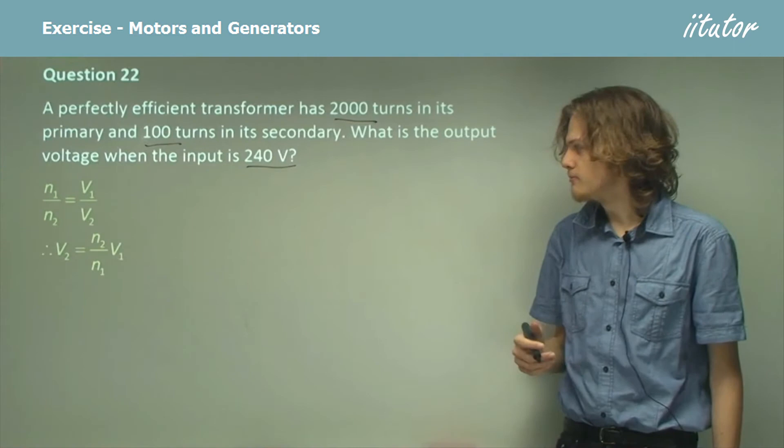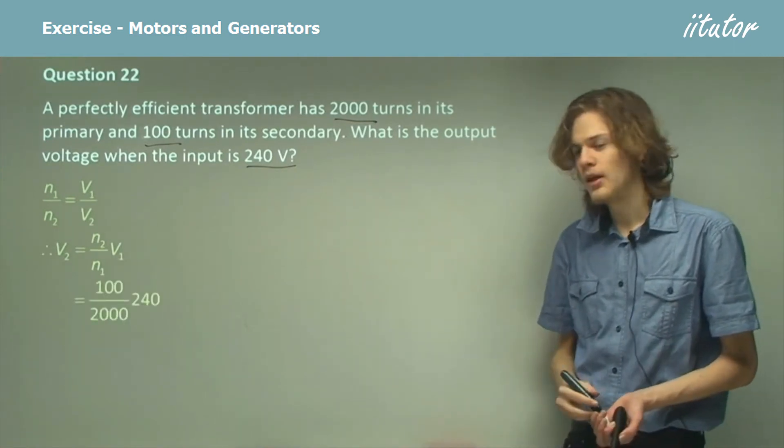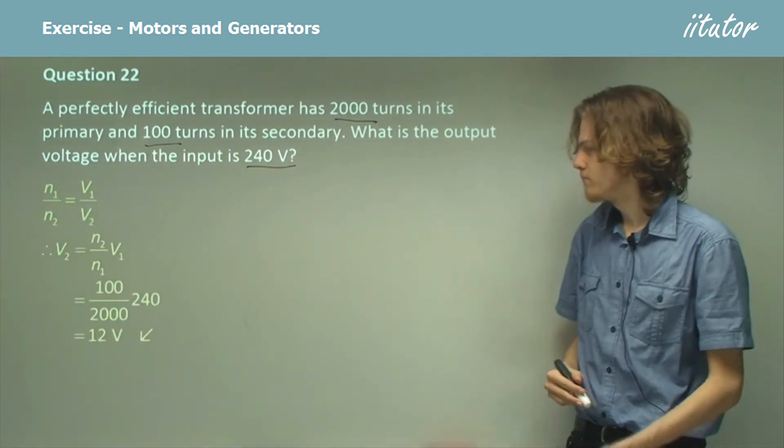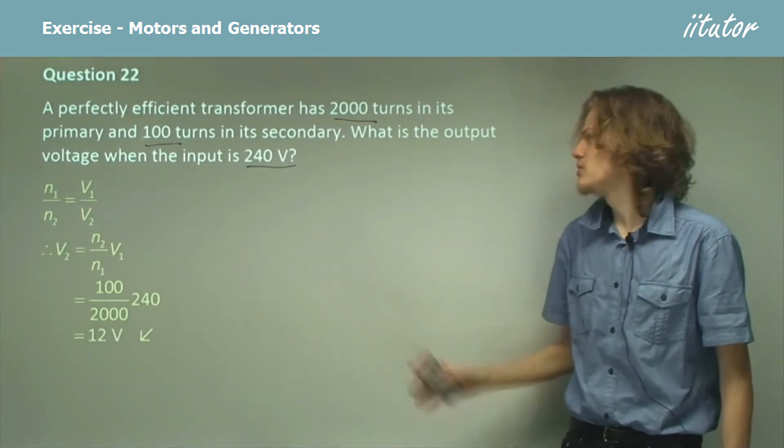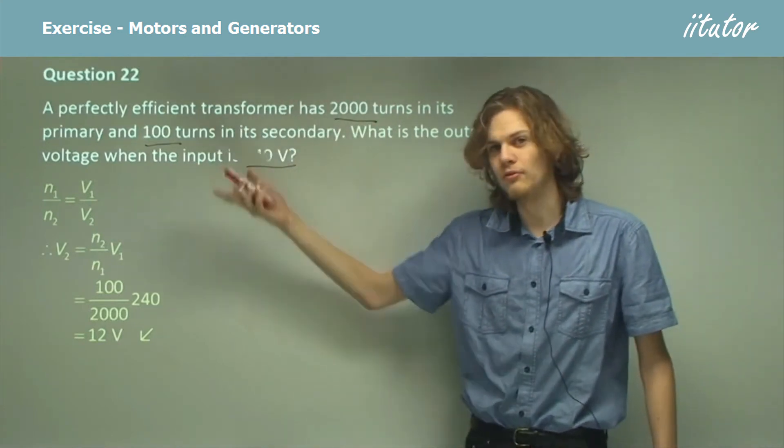So we stick this into the equation. And now we can evaluate that and we find that it ends up being 12 volts, which is exactly what we would expect if we start with a large number of turns and end up with a small number of turns.